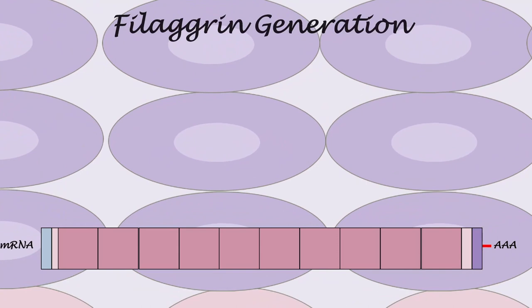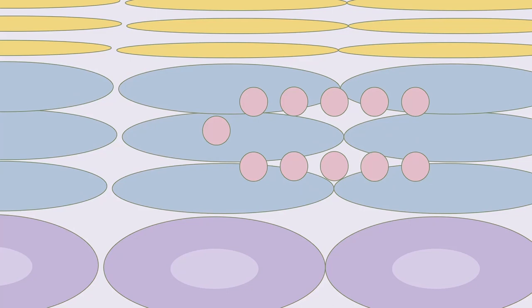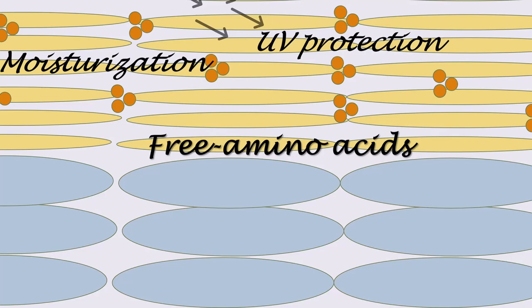In normal filaggrin generation, pro-filaggrin is synthesized in the granular layer by translating FLG genes. At the granular to cornified cell transition, pro-filaggrin is cleaved by protease into filaggrin. Filaggrin then aggregates into the upper layers of the skin and brings together structural proteins to create a strong barrier, carrying out various functions including hydration and UV protection.